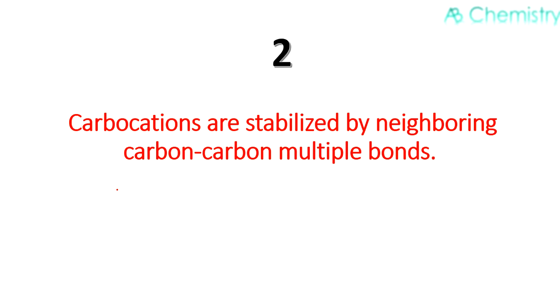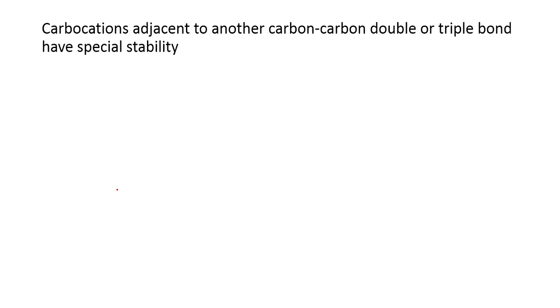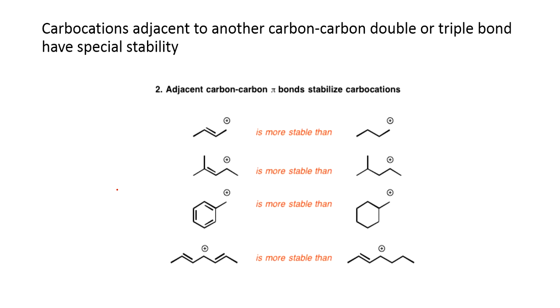So let's go to the second factor. Carbocations are stabilized by neighboring carbon-carbon multiple bonds. Carbocations adjacent to carbon-carbon double bonds or triple bonds have special stability because of the overlap between the empty p orbital and the pi bond, allowing them to be shared over multiple atoms. This effect is called delocalization.